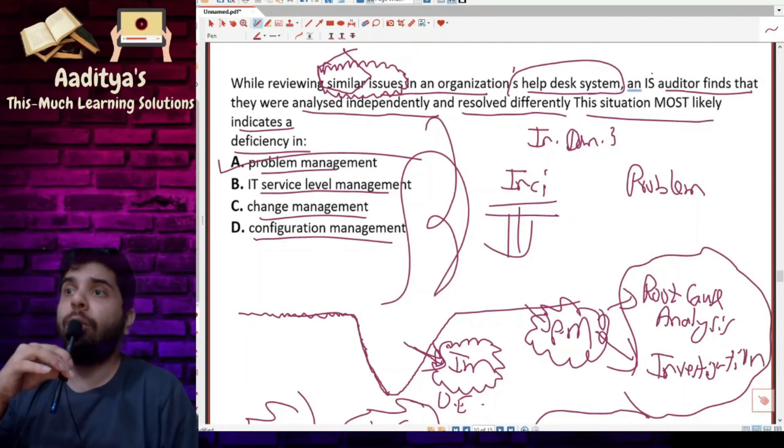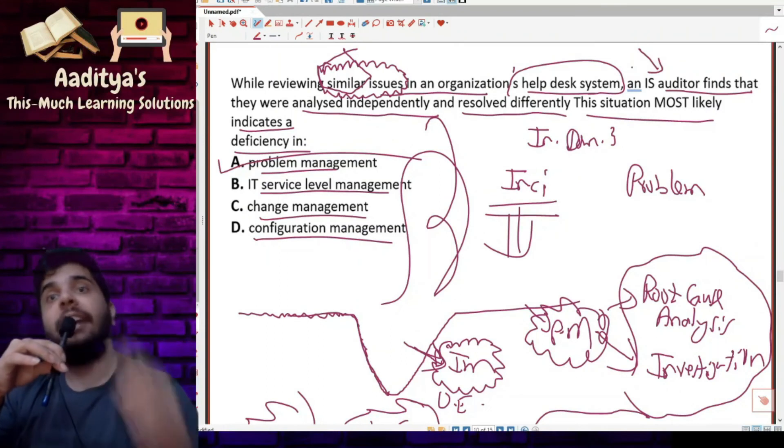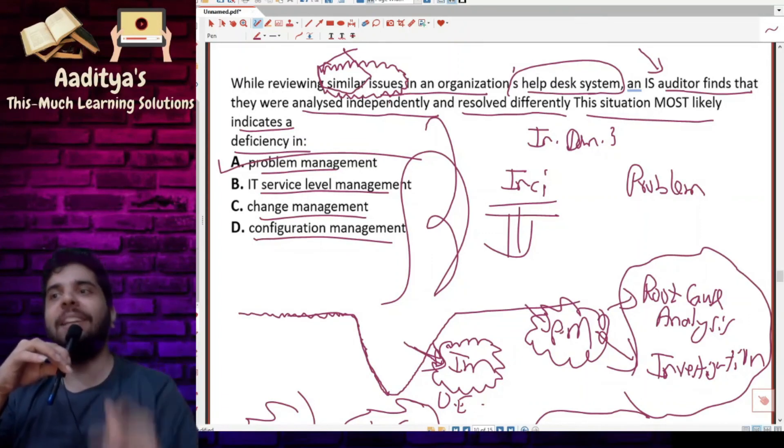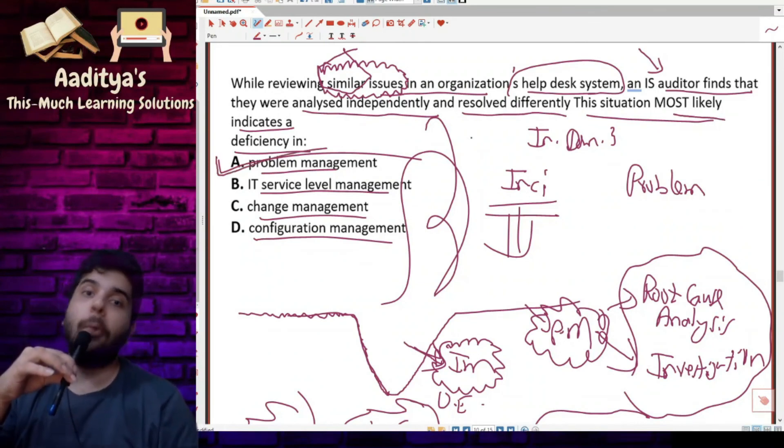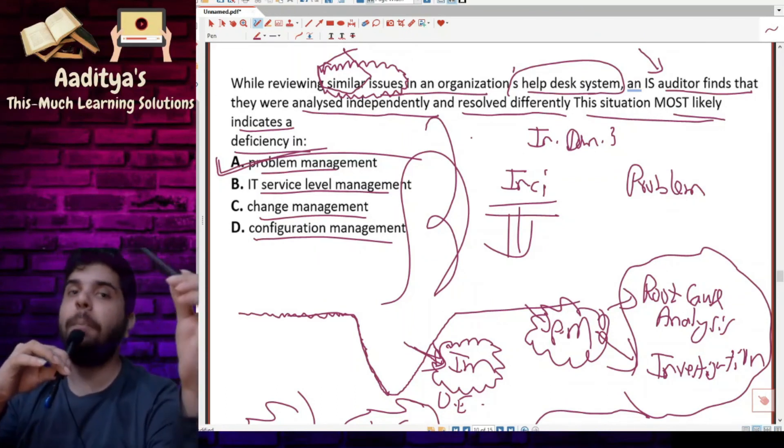The IS auditor was looking at why we are facing similar issues. The IS auditor finds that they were analyzed independently, resolved differently, there was no coordination, there was no proper management. So basically, this situation most likely indicates a deficiency in problem management. The correct option is option A, problem management.